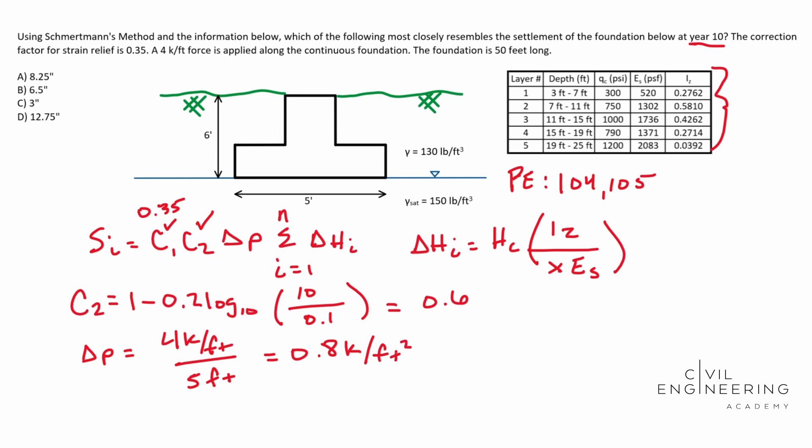However, we do notice that our units are in pounds. So let's go ahead and convert this because we may have to use pounds later in the problem. Well, 1000 pounds is a kip. So this means this is 800 pounds per square foot. So we've solved all three of these.